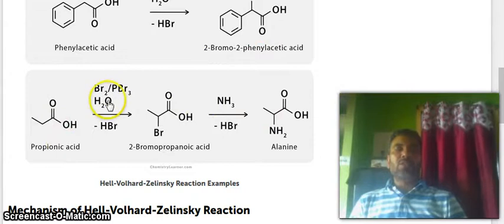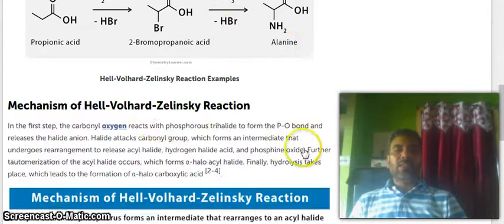Reaction occurs in the presence of Br2, PBr3 in water. After removing HBr, this is the substitution product here alpha-bromo or bromopropanoic acid and further reactions give the alanine.